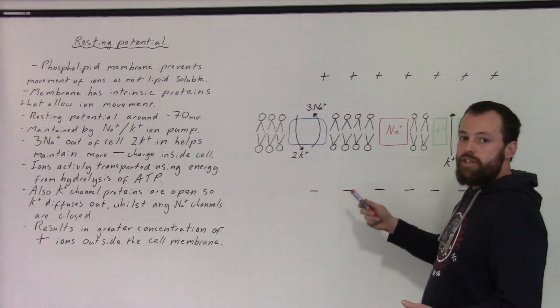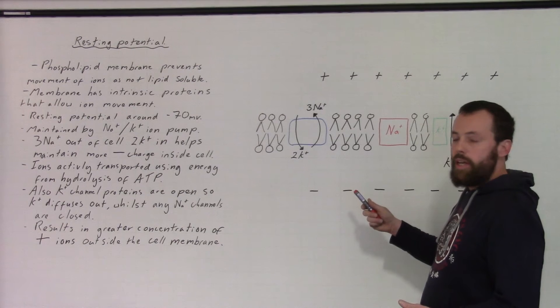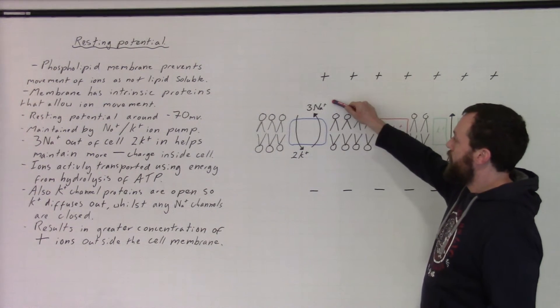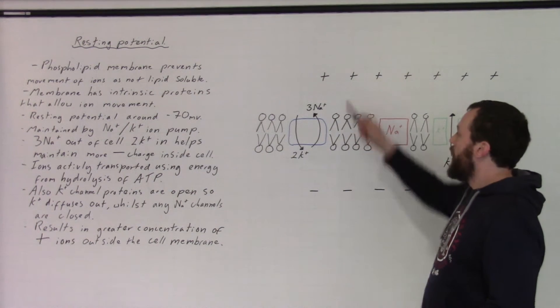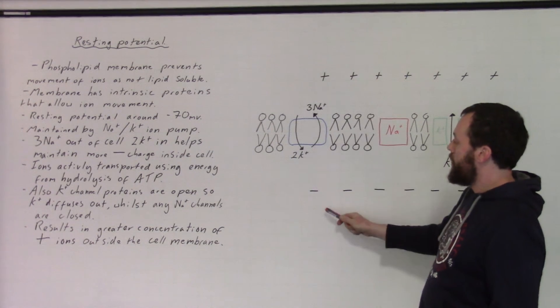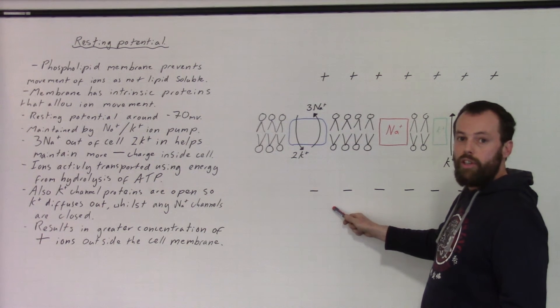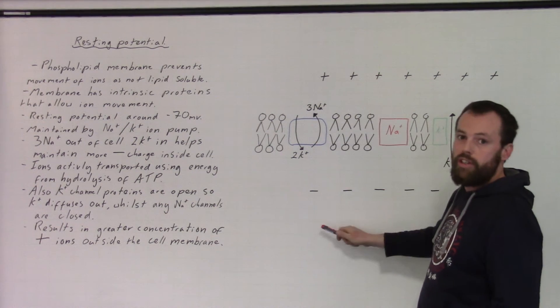This uses energy from the hydrolysis of ATP. Because more positives are pumped out than in, we get this relative charge of being more positive on the outside and therefore negative on the inside.